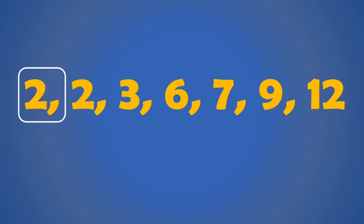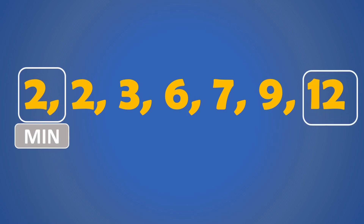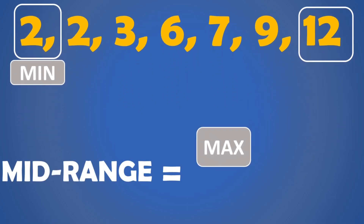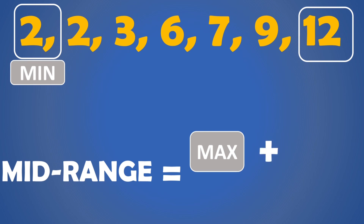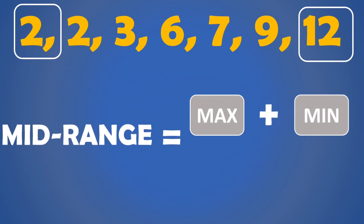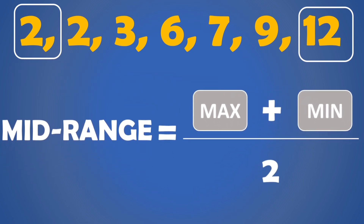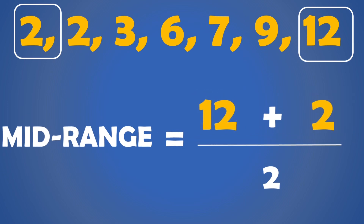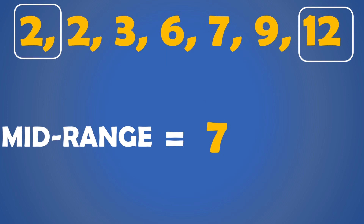The minimum value is 2 and the largest value is 12. Using the formula, mid-range equals maximum value plus minimum value divided by 2. So the mid-range equals 12 plus 2 divided by 2. That's 14 divided by 2, and we have 7. So our mid-range is 7 cases.